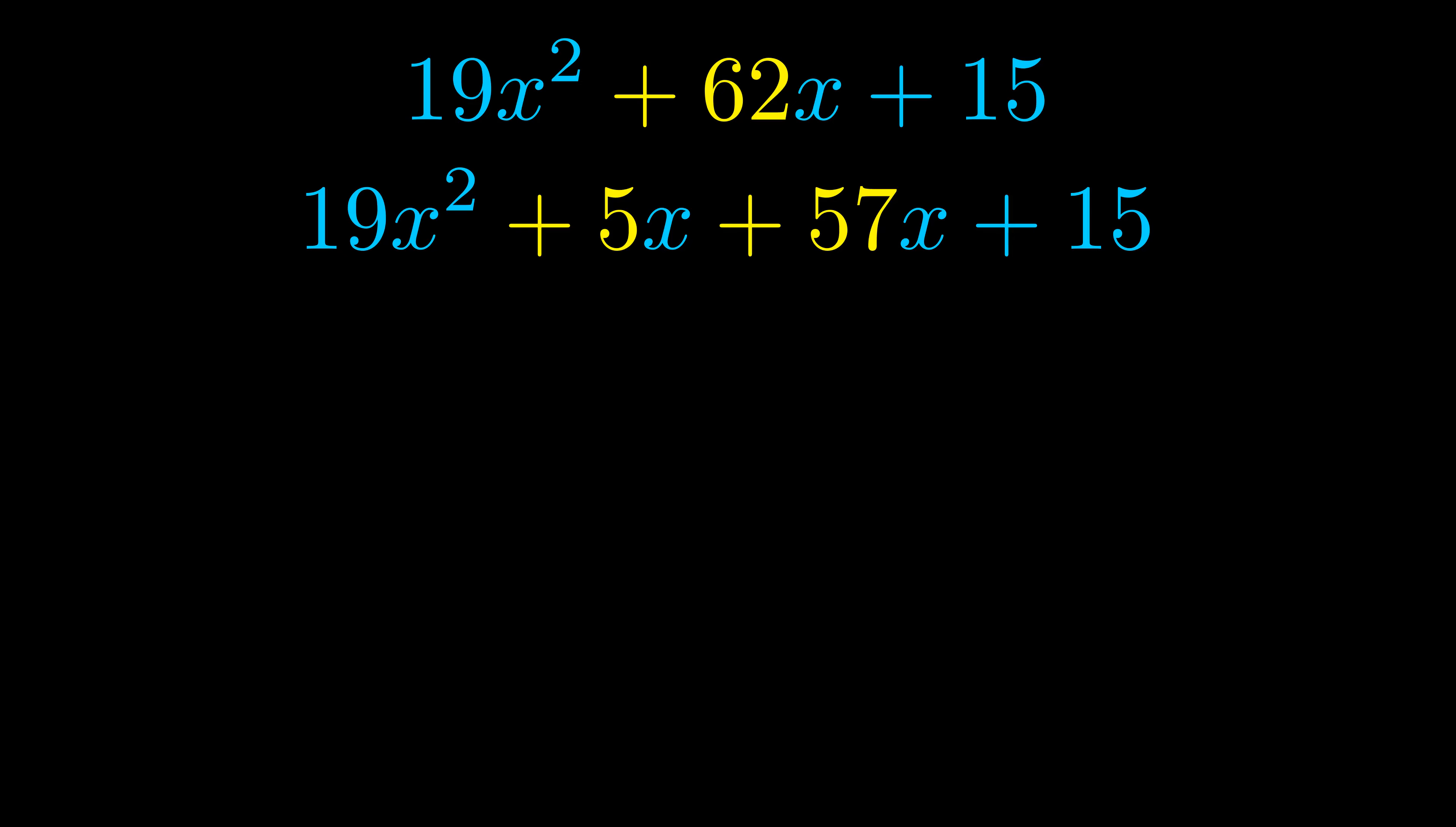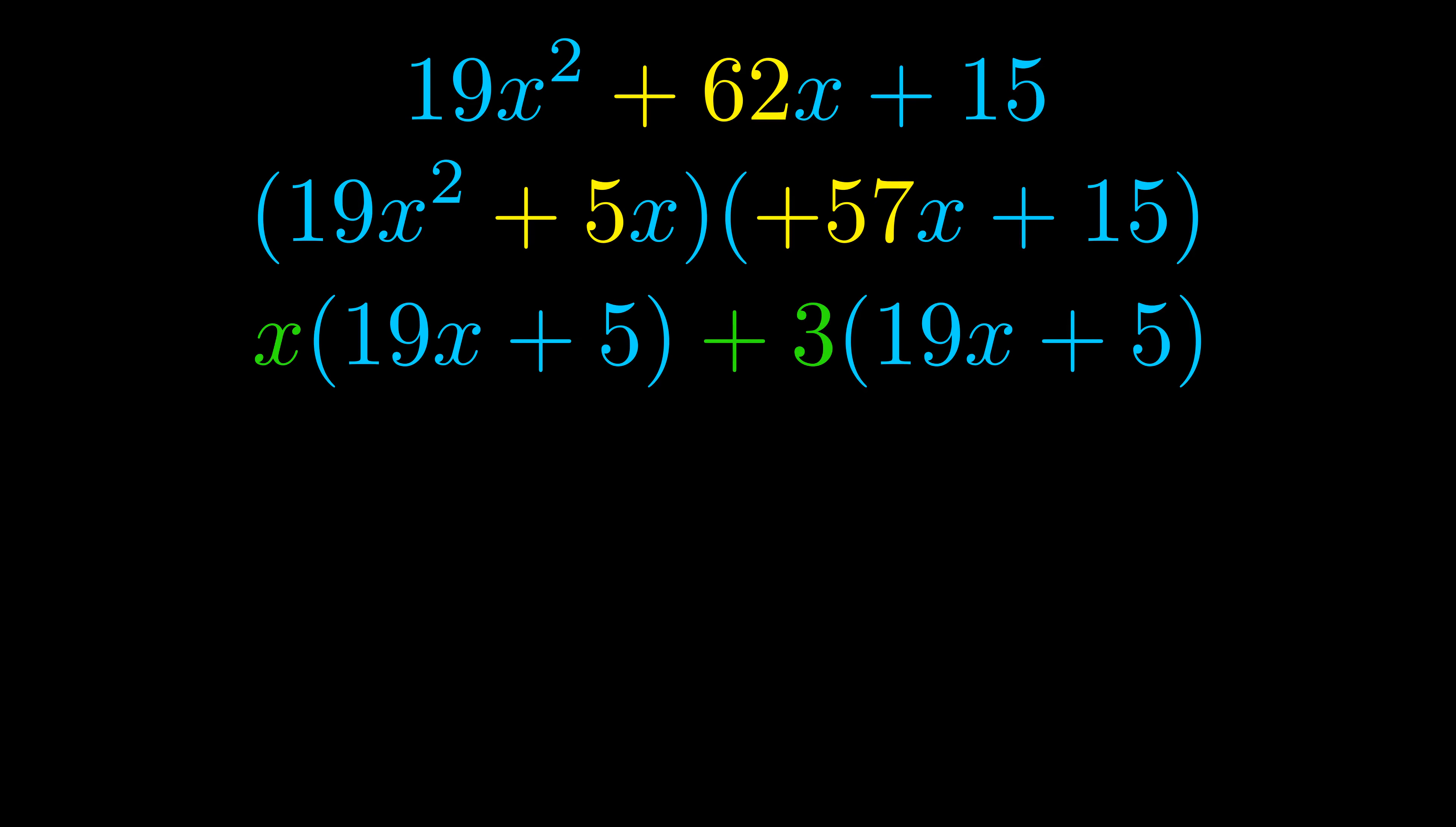Once we've done this, we go ahead and put parentheses around the first term and the last term. And we do that so that we can take the greatest common factor out of both terms. We can see the greatest common factor is now outside in green.